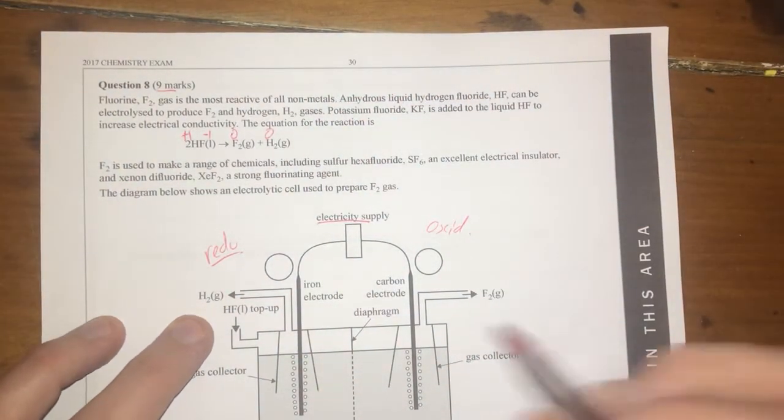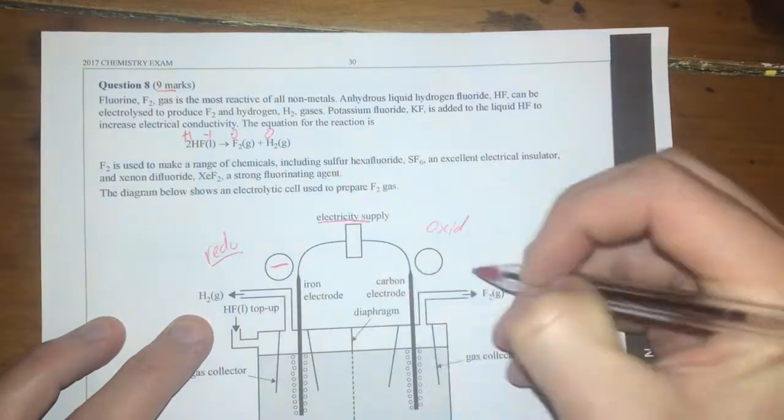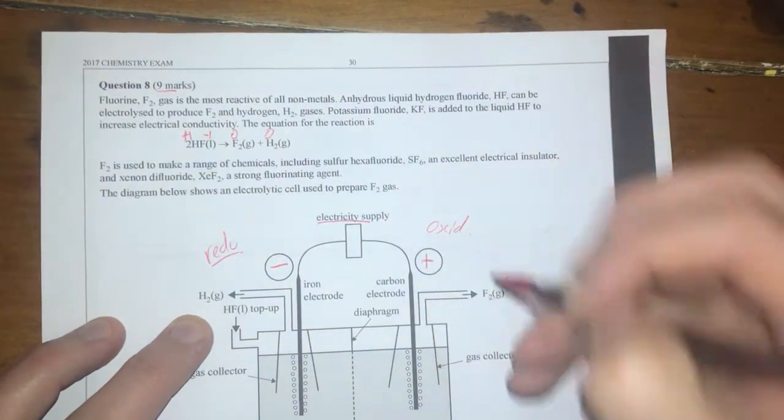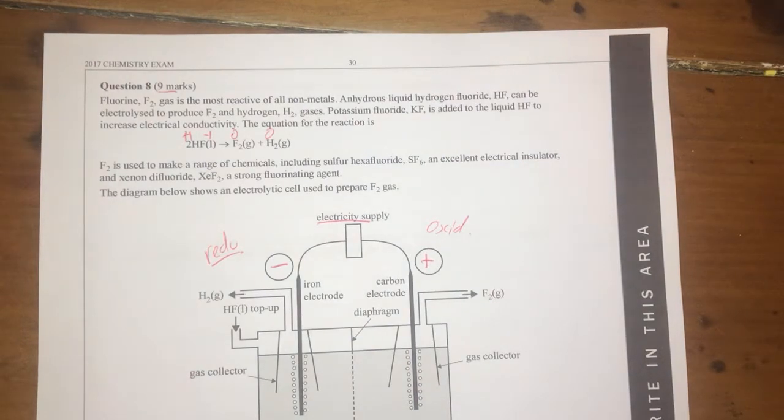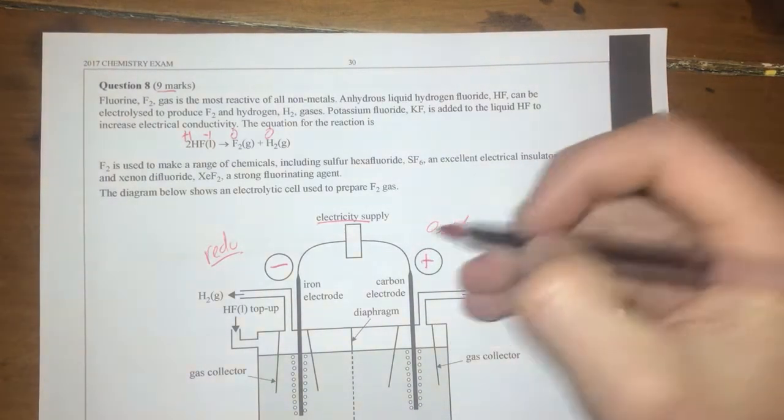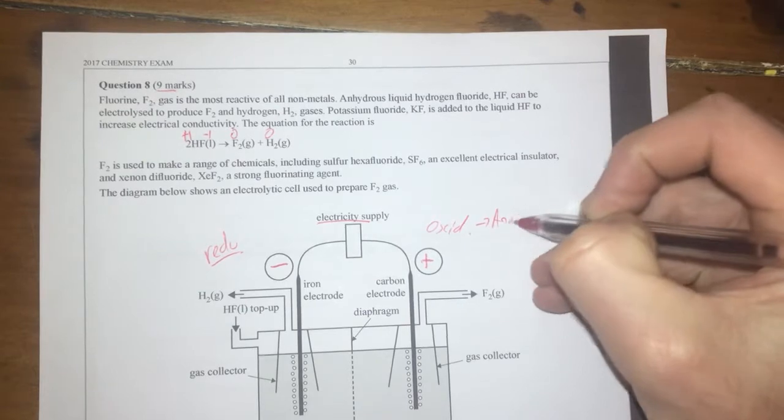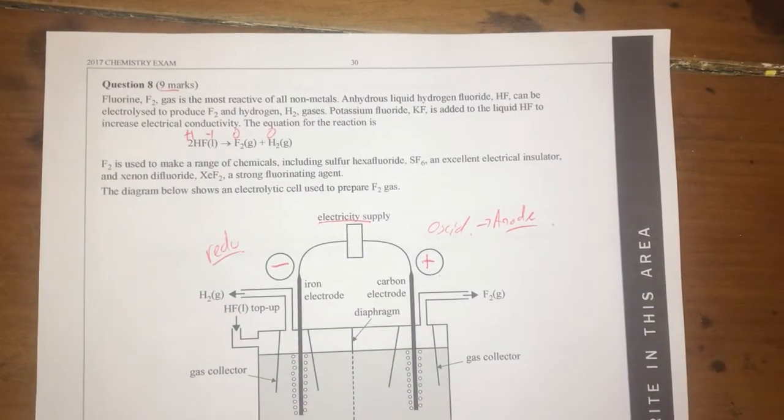So therefore in an electrolytic cell the reduction will be negative because it's a cathode and the oxidation will be positive because that's the anode and that's what happens in an electrolytic cell because oxidation occurs at the anode which in an electrolytic cell is positive. So it's that one done.